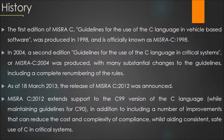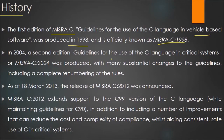The first edition of MISRA-C, 'Guidelines for the Use of C Language in Vehicle-Based Software,' was produced in 1998 and is officially known as MISRA-C 1998. In 2004, a second edition — MISRA-C 2004 — titled 'Guidelines for the Use of C Language in Critical Systems' was released, changing the scope from vehicle-based to critical systems.